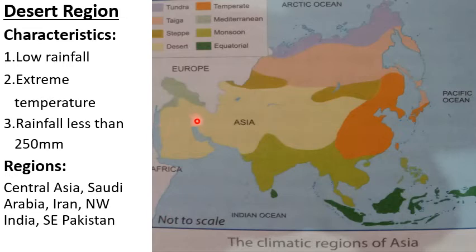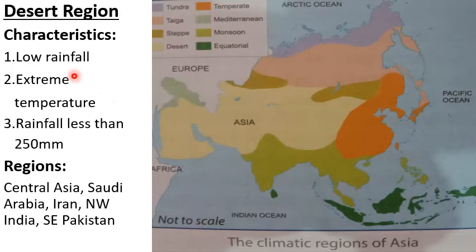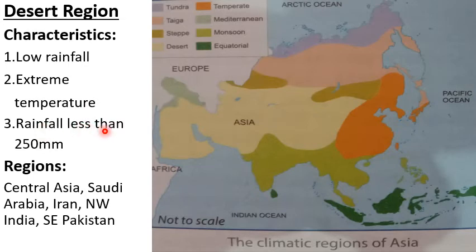The yellow color on the map represents the desert region, which includes Central Asia, Saudi Arabia, Iran, Northwest India — that is the Thar Desert — and Southeast Pakistan. The characteristics of this climate are low rainfall and extreme temperatures, meaning summers are very hot and winters are very cold. Not only is the annual range of temperature very extreme, but the diurnal range of temperature is also very extreme, because days are very hot and nights are very cold. Rainfall is less than 250 millimetres.